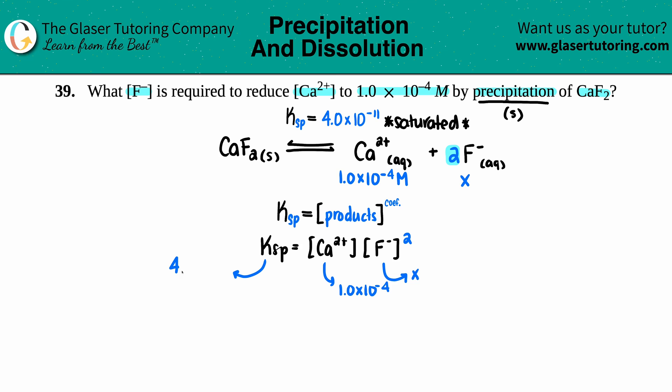Let's plug in. So 4.0 × 10^-11 equals 1.0 × 10^-4 times x². We first have to divide by 1.0 × 10^-4. Divide by 1.0 × 10^-4, get rid of that.